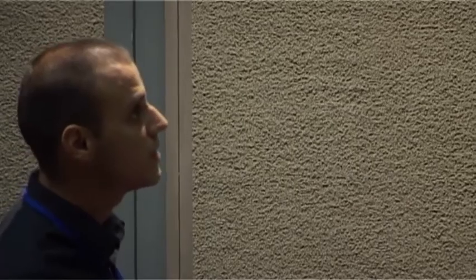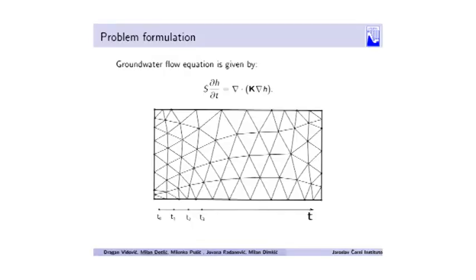Groundwater flow is given with this equation. It describes flow over some volume. We specify some conditions on the boundary. We can't always find a solution of this equation. In order to find a solution, we must do some kind of discretization.